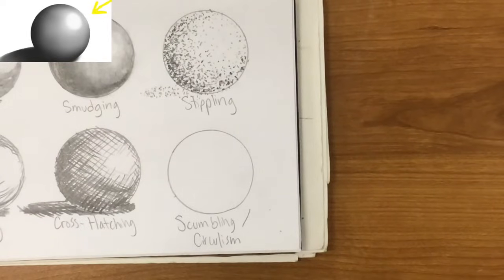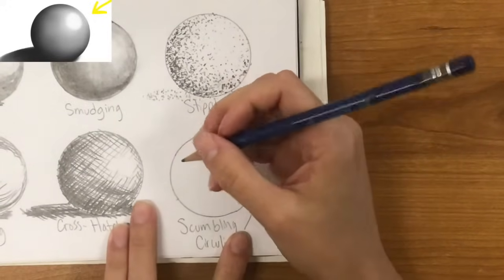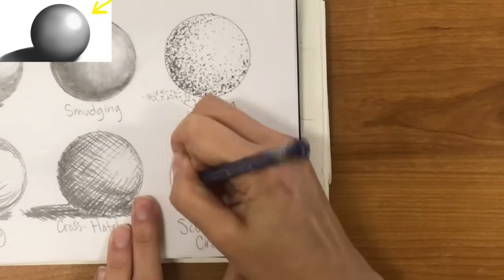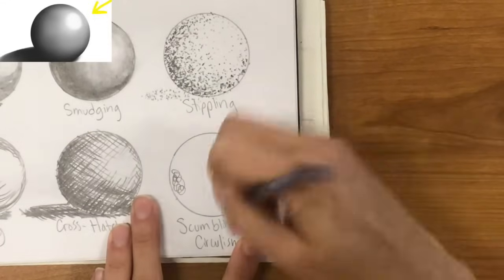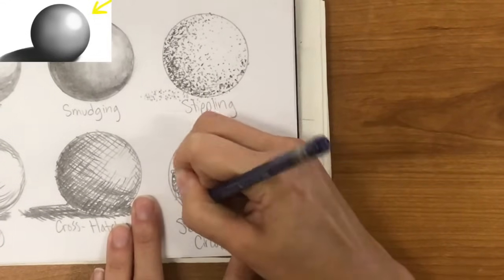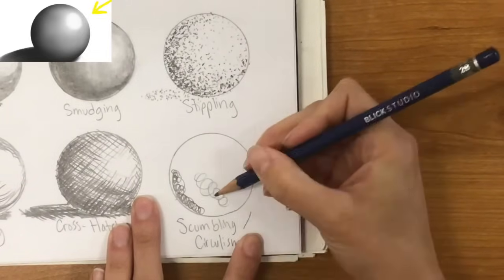And the last one is scumbling or circulism. You can call them either name. I'm going to go ahead and use my 2B pencil. You can test it out with a 4B pencil if you would like to. So this one you're going to just make a series of swirls and kind of scribbles. And the smaller your scribble, the darker it's going to look. The more spread out your scribble, the lighter it's going to look.